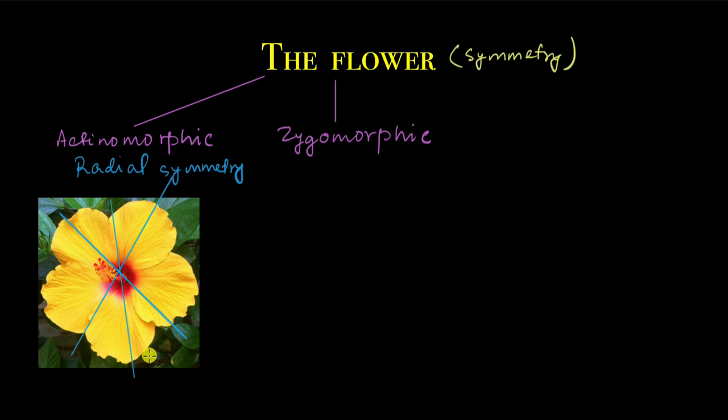There are five planes like this. If you imagine three-dimensionally, these are planes that are cutting the flower. There are five such planes in this case which can cut the flower in a way that divides it into two equal halves — that's radial symmetry. The flowers which have radial symmetry are called actinomorphic. 'Actino' actually means ray, so when you draw all these lines that divide the flower into halves, they look like rays — hence actinomorphic.